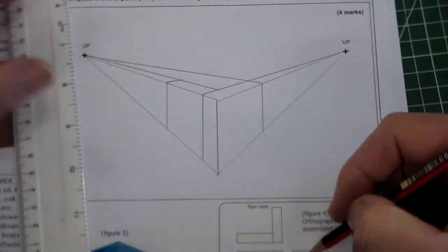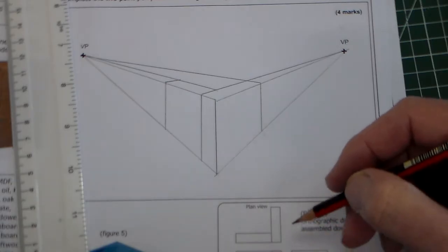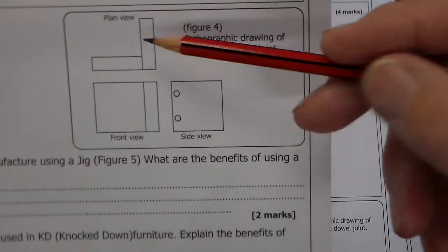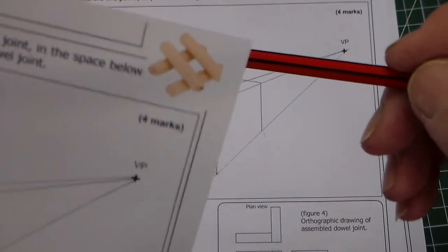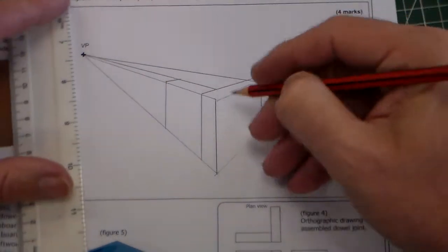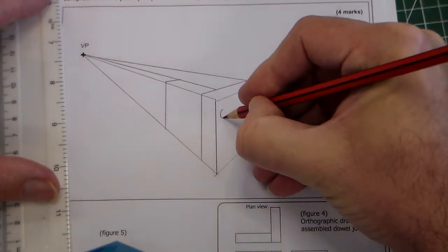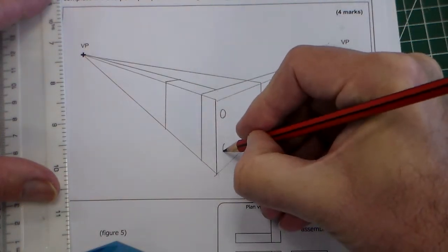Then the last part, obviously, as you can see here, we've got the two dowels, because they'd be drawn in, they'd be those dowels there. And I'd just freehand draw those in, and there are the two dowels.